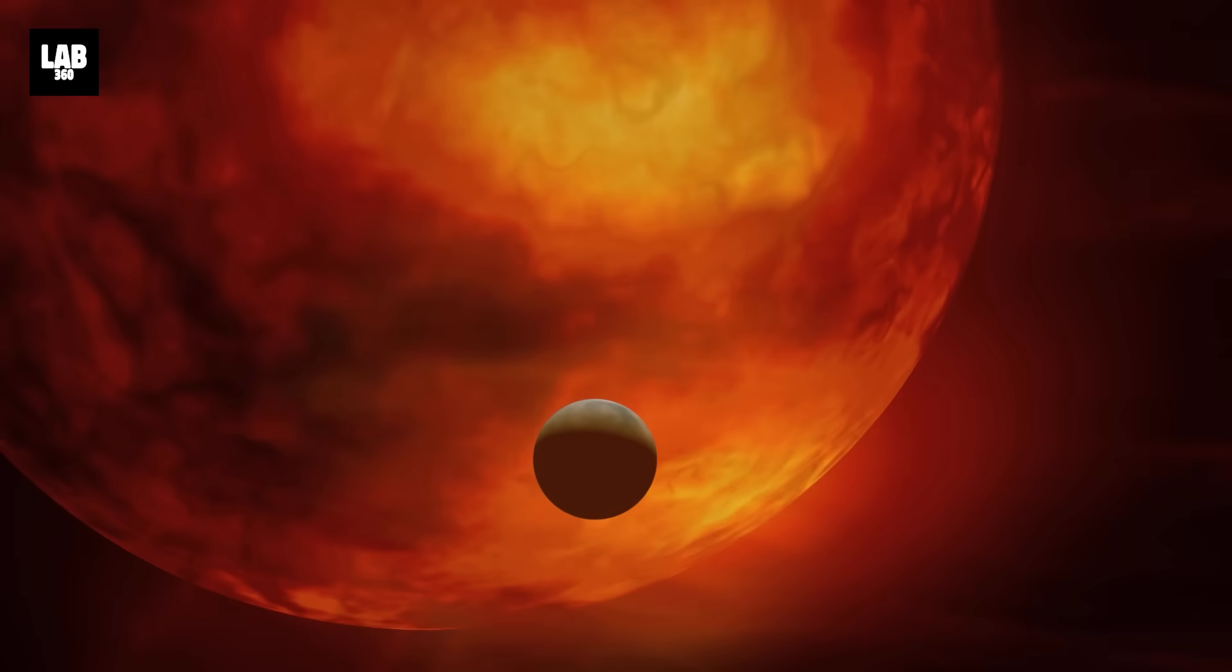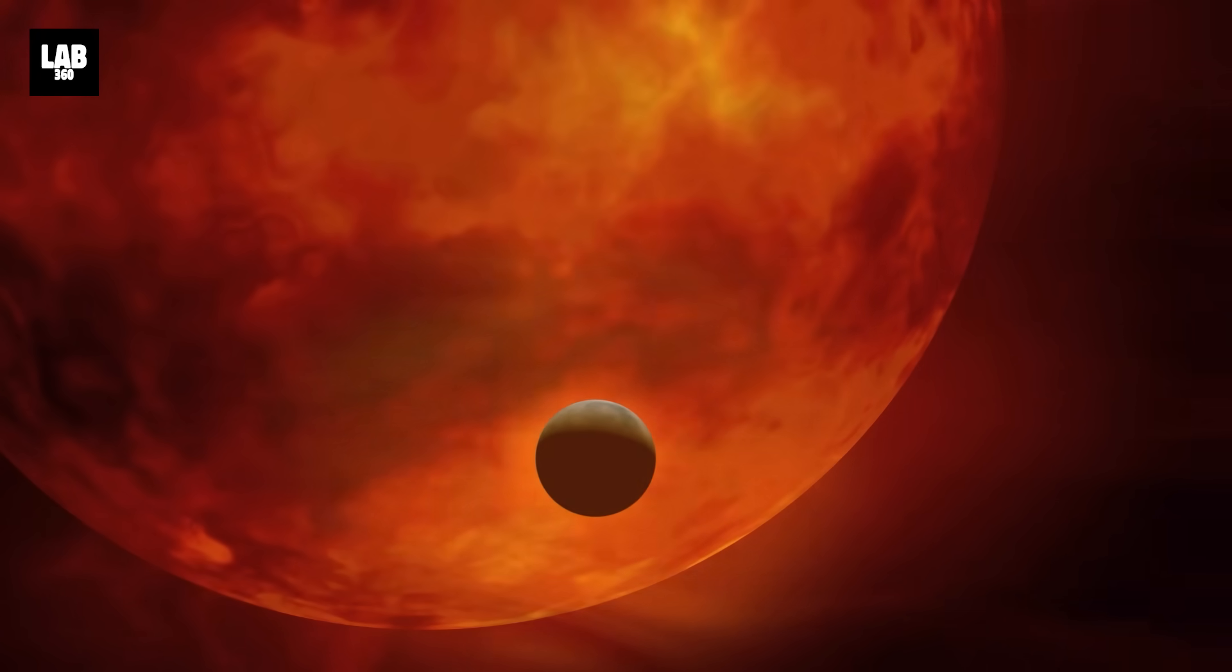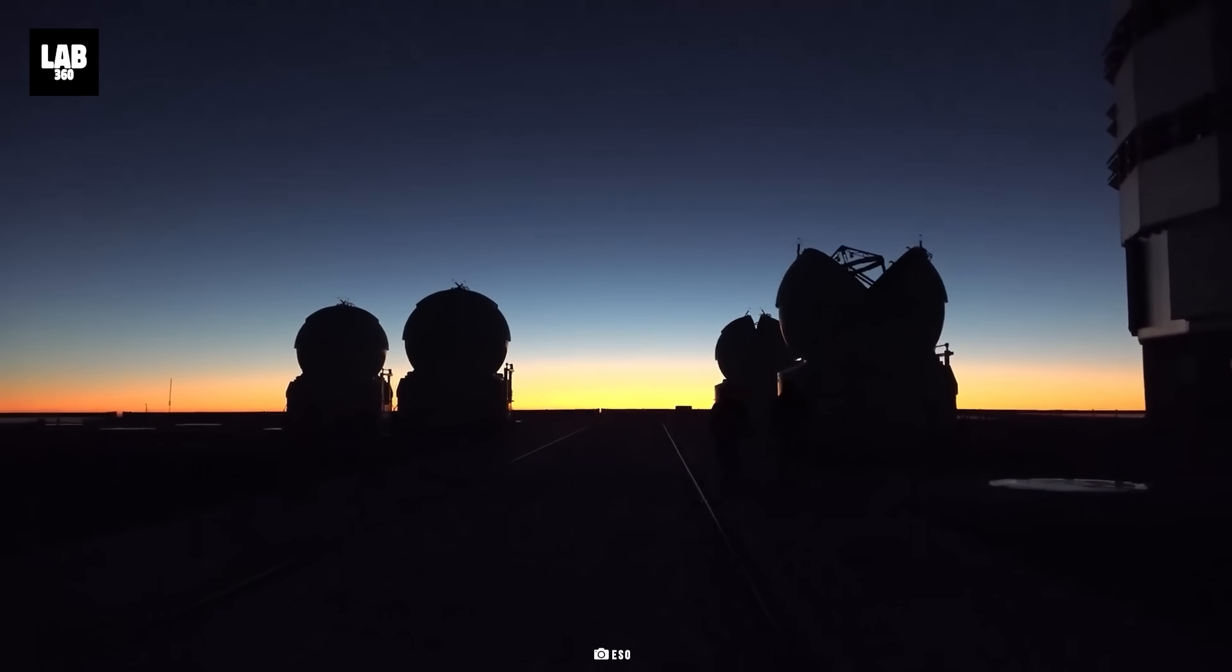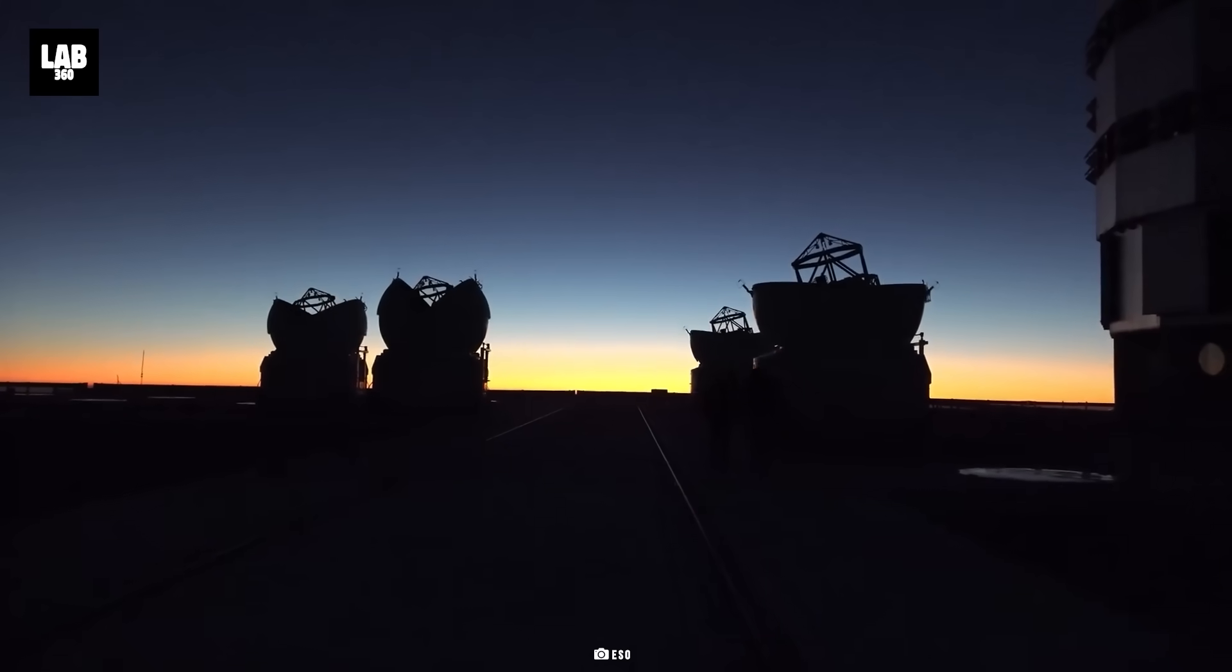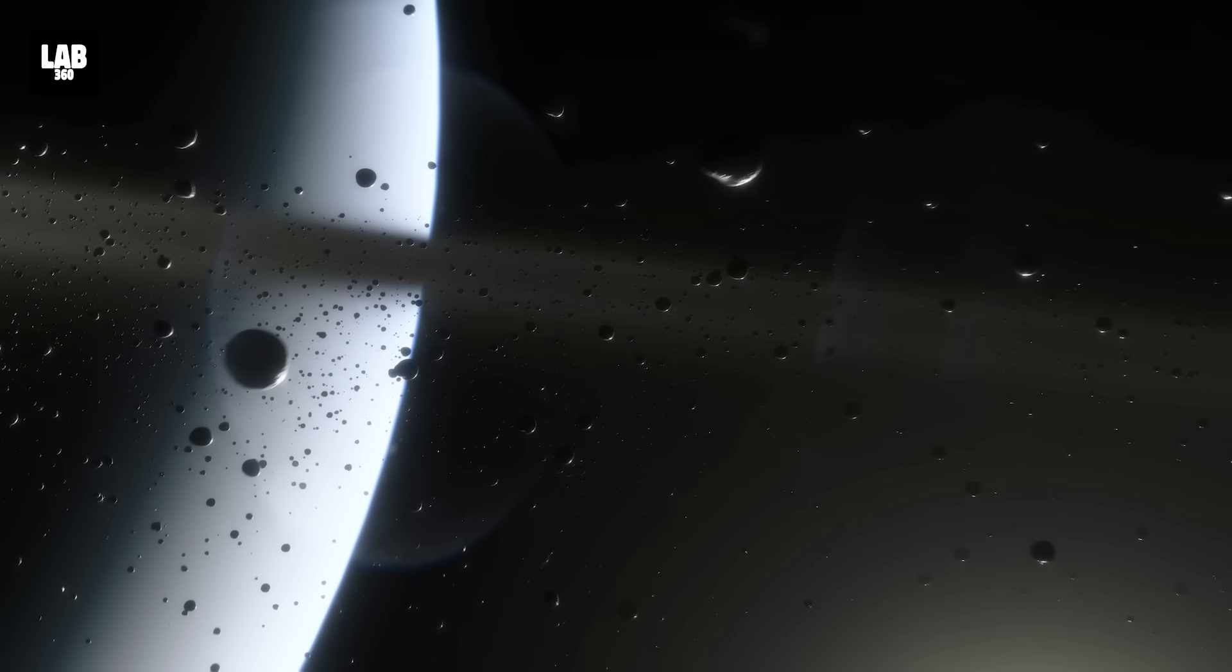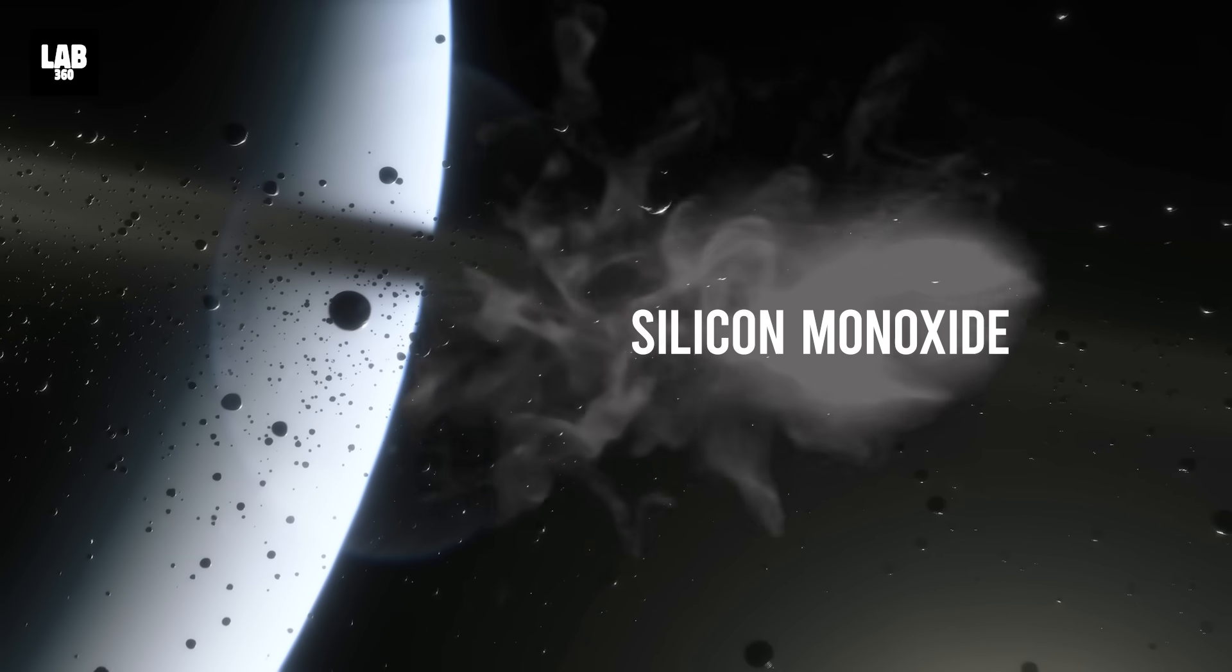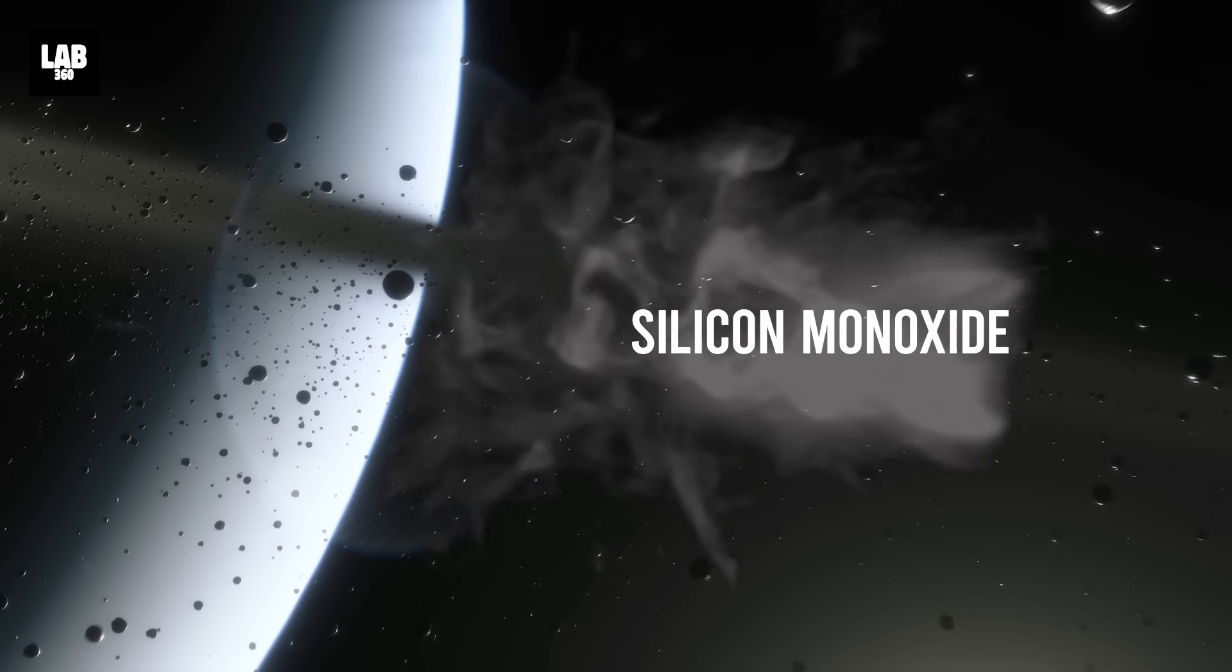However, the truth behind Betelgeuse's strange behavior turned out to be as fascinating as it was unexpected. Thanks to high-resolution images captured by the MATISSE instrument on the European Southern Observatory's Very Large Telescope Interferometer, scientists discovered a surprising culprit: dust. This dust, in the form of silicon monoxide, created a dark veil around Betelgeuse, causing it to dim significantly.